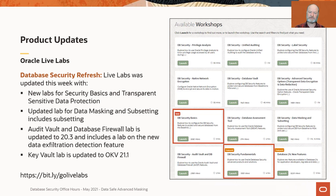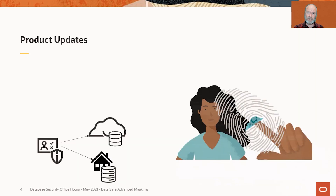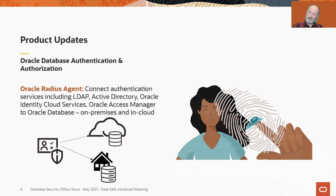Our final announcement for the month is kind of a long one, and it doesn't even come from the database security team. Our identity and access management group has released a new product called the Oracle Radius Agent. This is important from a database security standpoint because the Oracle Radius Agent allows you to connect your Oracle databases to different authentication sources like the Identity Cloud Services or Oracle Access Manager for improved and enhanced multi-factor authentication to the database.